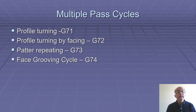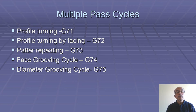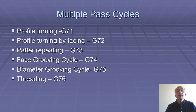Then for face grooving operation we can use G74 cycle. For diameter grooving, G75 cycle is used, and for threading operation G76 cycle is used. In multiple pass cycles we do not have to define each cut, so use of multiple pass cycles is important in CNC turning as the length of the program reduces considerably.